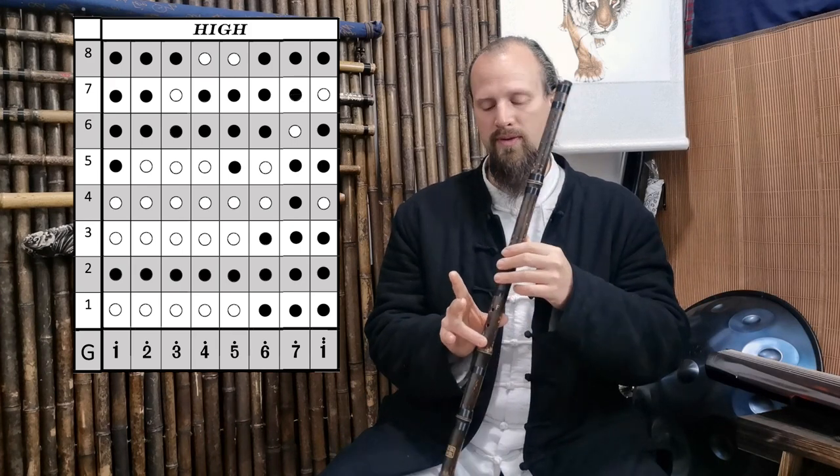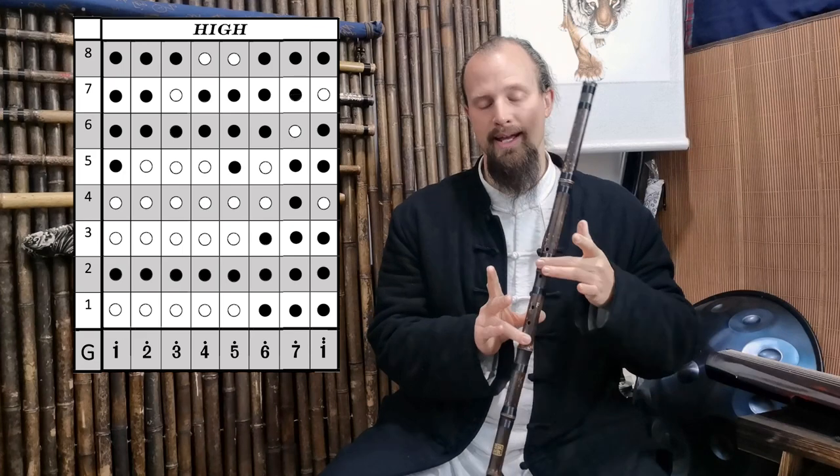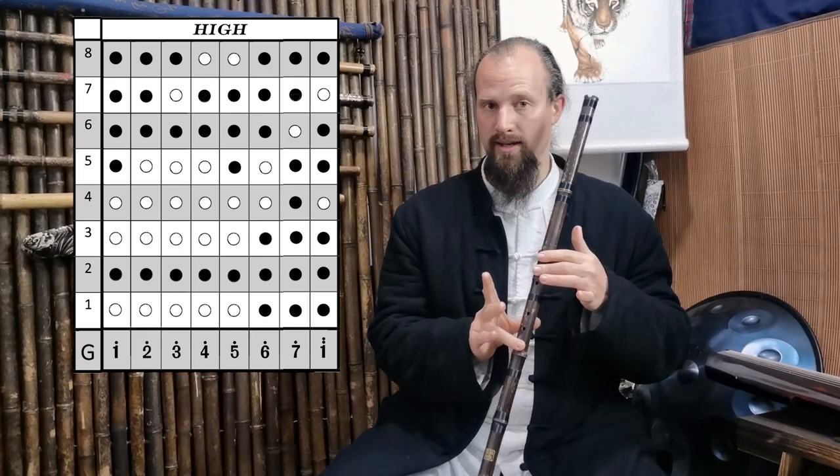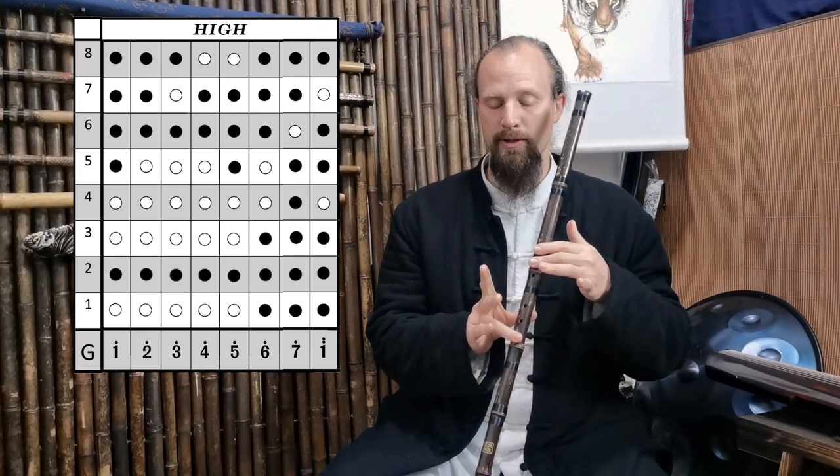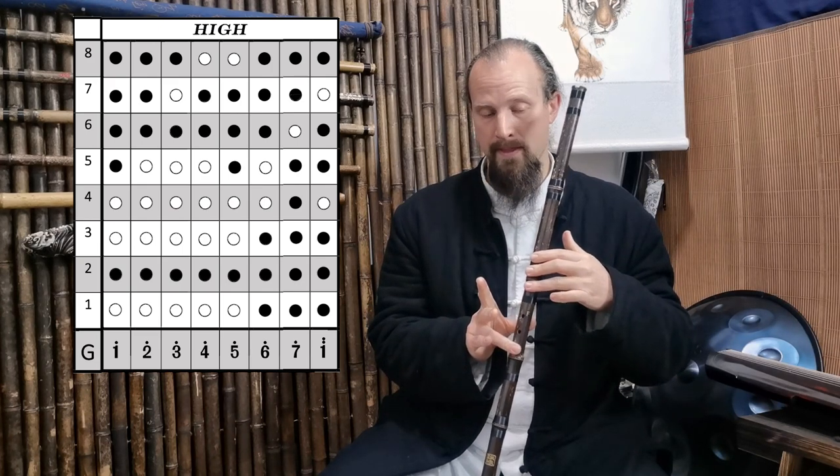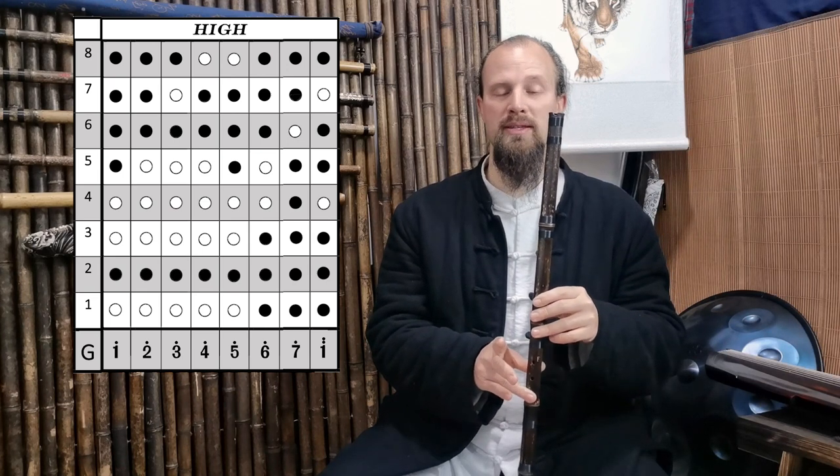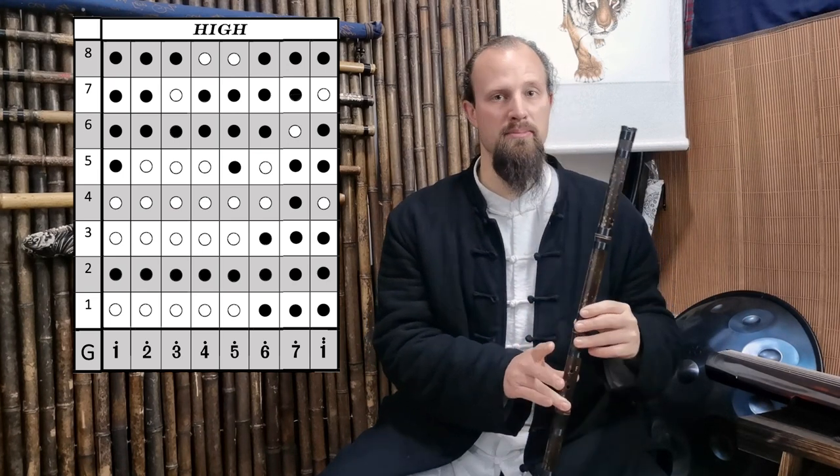What I prefer is to simplify it by going 1, 2, 3 then removing the thumb and only replacing the index finger on 7. That's going to be an easier progression considering the next note is replacing the ring finger. So your 5 in the higher register is going to be the same as the 4 in the middle register.